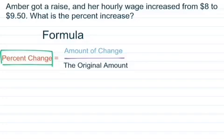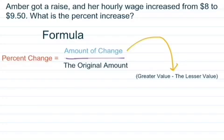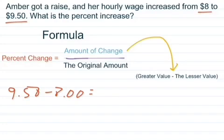The amount of change is essentially the greater value in this word problem, which is $9.50, and we subtract that from the lesser value, which is $8. So we find the amount of change, $9.50 minus $8. In this case, it would be $1.50, and then we put that over the original amount, which is $8.